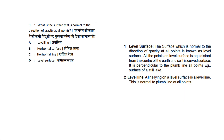So to answer question 1: the surface that is normal to the direction of gravity at all points is called the level surface. The answer is option D: Level Surface.